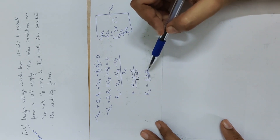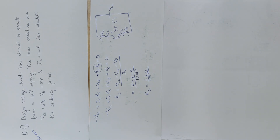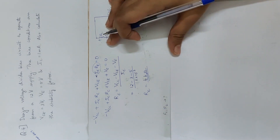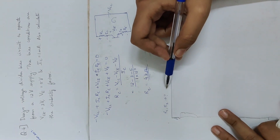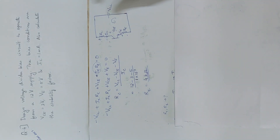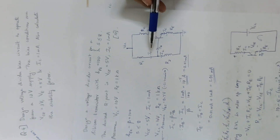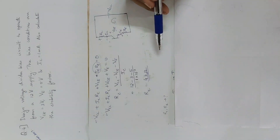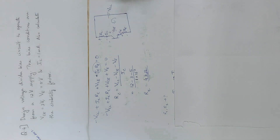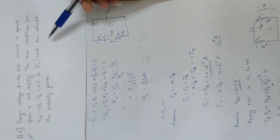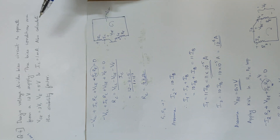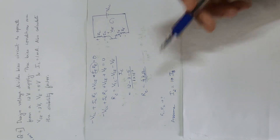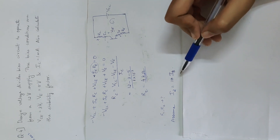Applying KVL in the outer loop gives us the collector resistance RC value. Next we need to find R1 and R2 values. We take the assumption that I2 is equal to 10·IB.